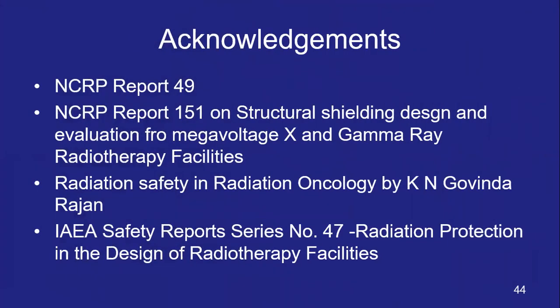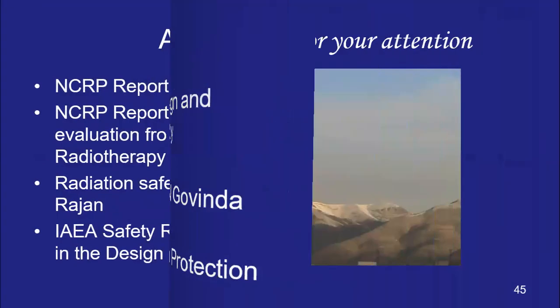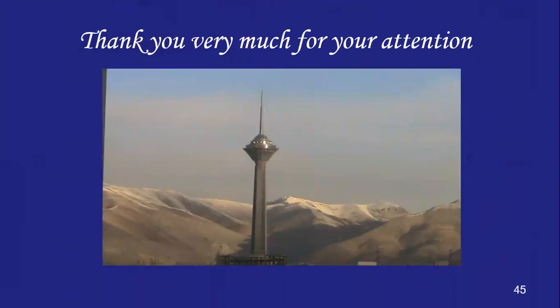The references used in this lecture are NCRP Report 49, NCRP Report 51, NCRP Report 151, the book on Radiation Safety and Radiation Oncology by Kane and Govindarajan, and IAEA Safety Report Series 49 on Radiation Protection in the Design of Radiotherapy Facilities. Thank you very much for your patient listening. Please complete the MCQs following this lecture and then move on to the next lecture.